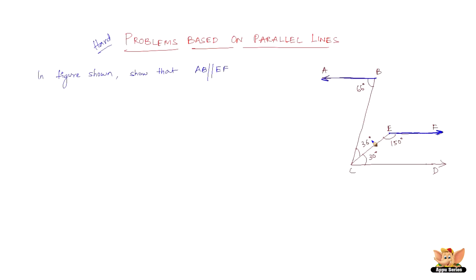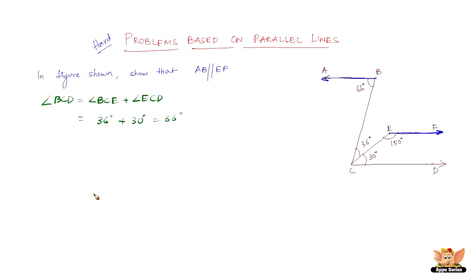Now we have angle BCD equals angle BCE plus angle ECD, because this line splits the angle BCD. This total angle BCD is a summation of BCE and ECD. So we have angle BCD equals 36 degrees plus 30 degrees, which equals 66 degrees.